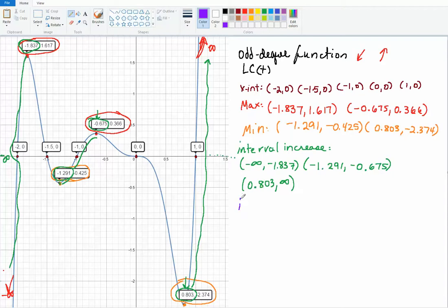Now, the intervals of decrease. So the function is increasing. And then from this x value going down, coming down, still going down, up to this x value. So focus on the purple. Negative 1.837 until negative 1.291, the function is decreasing.